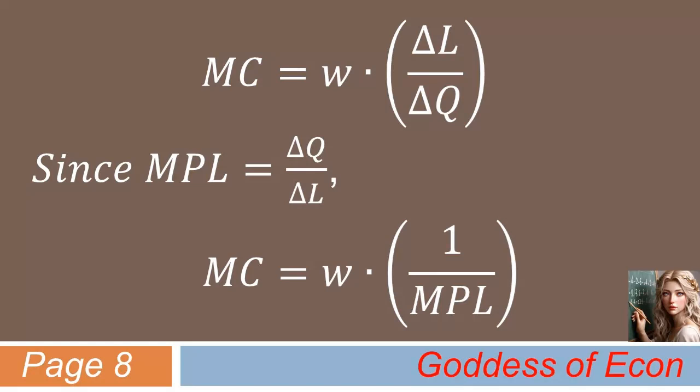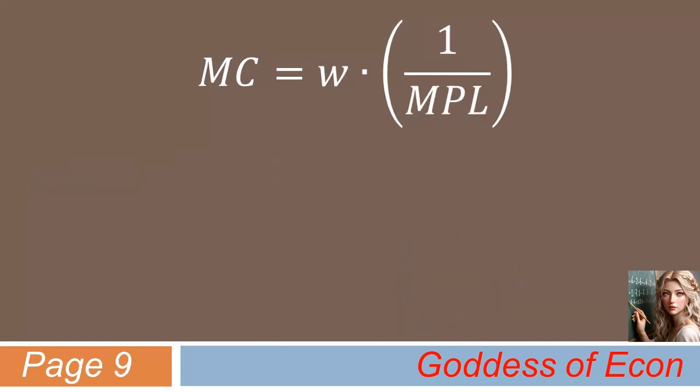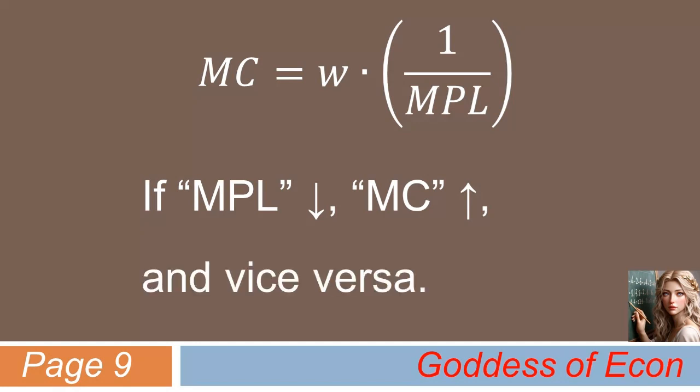And now we're almost there. What does this equation tell us? Well, it shows that marginal cost is inversely related to marginal product of labor. As marginal product of labor decreases, marginal cost increases. And vice versa.